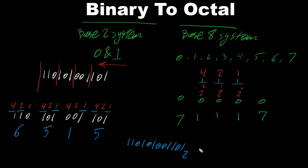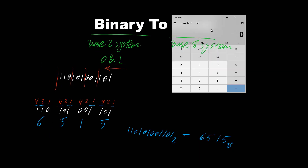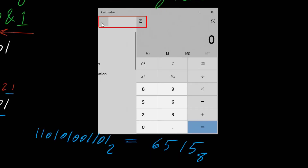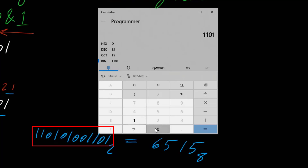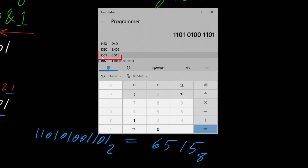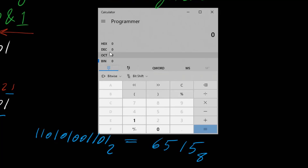We write it as: 11010101101 subscript 2 equals 6515 subscript 8. Let's verify using a calculator — switching to Programmer view, making sure BIN is selected, and entering 1 1 0 1 0 1 1 0 1. The octal result shows 6515. Note: in BIN mode only 0 and 1 are available, while in octal mode digits 0 to 7 are available, since octal is a base 8 system.